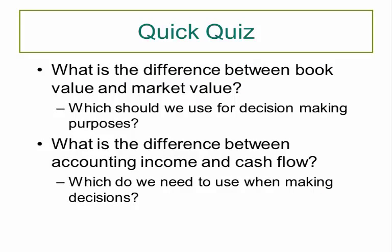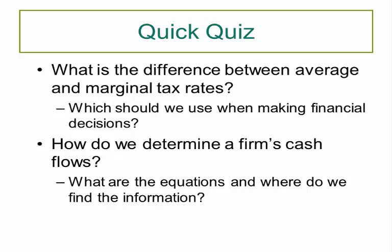To wrap up Lecture 1.3, here are the four key questions you should be able to answer: What is the difference between book value and market value, and which should we use for decision-making? What is the difference between accounting income and cash flow, and which matters for decisions? What is the difference between average and marginal tax rates, and which should we use financially? How do we determine a firm's cash flows — what are the equations, and where do we find the information?